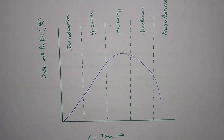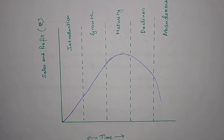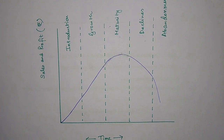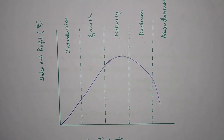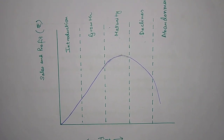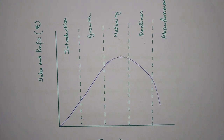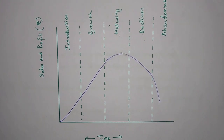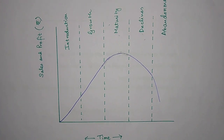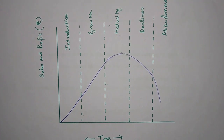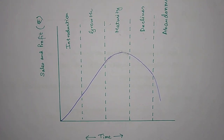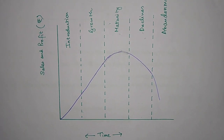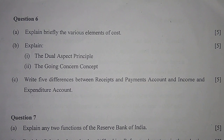In the decline stage of the product life cycle, the sale of the product decreases rapidly as the product is gradually displaced by a new or superior product. Unless new uses of the product are found, sales may decline rapidly and the product may soon go out of the market.